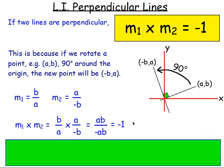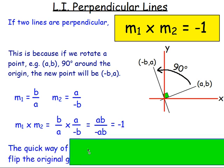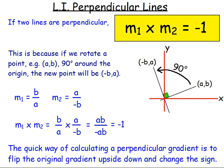If you multiply the gradients together and they are perpendicular, you get negative one. The quick way of remembering it: if the lines are perpendicular, turn the fraction upside down and change the sign.